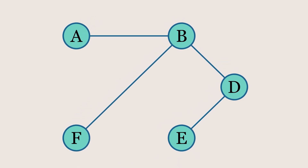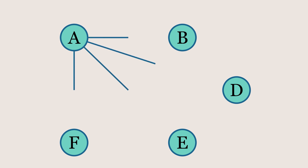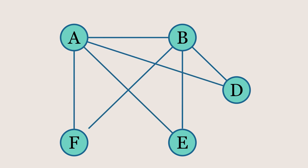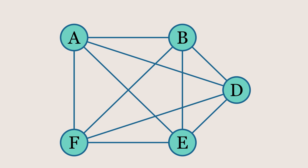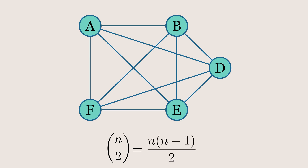What about the maximum number of edges? This happens when every node is connected to every other node. In the case of undirected graphs, the maximum number of edges is equal to the number of ways to choose two nodes out of n nodes, which is given by the formula n times (n-1) divided by 2.